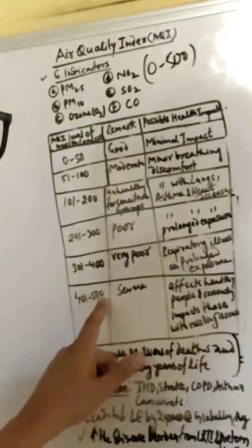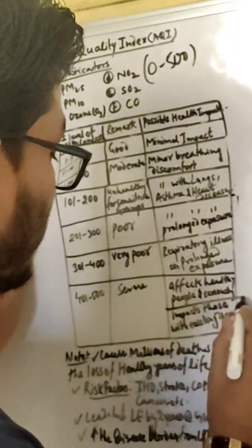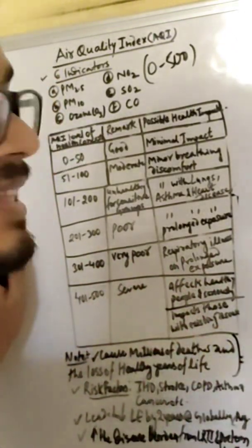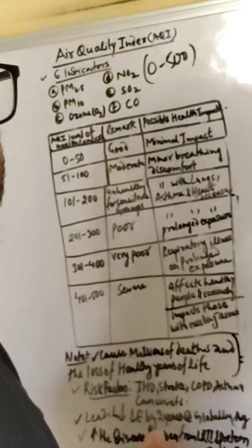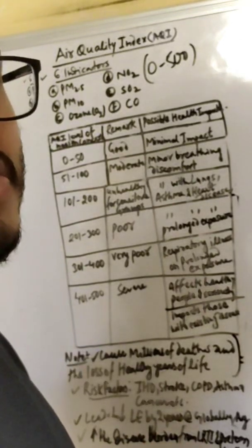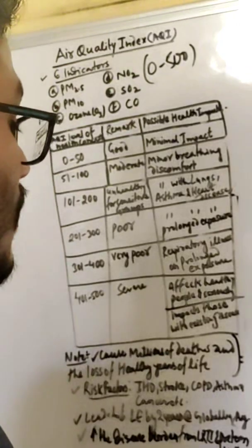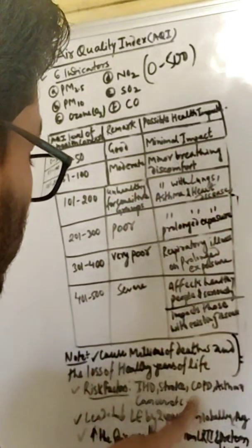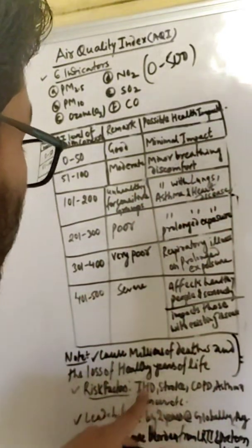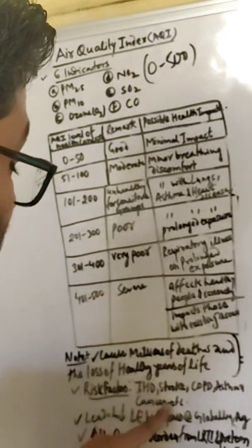400 to 500 is severe, affecting healthy people and seriously impacting those with existing disease. Those who already have a disease will suffer from severe problems such as asthma, COPD, stroke, ischemic heart disease, and even cancer.